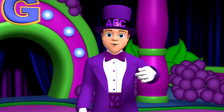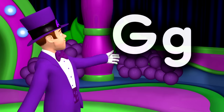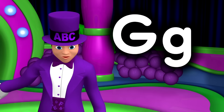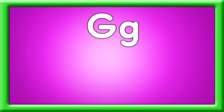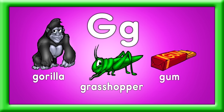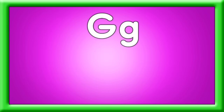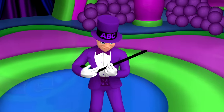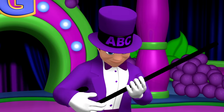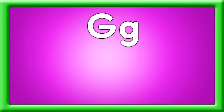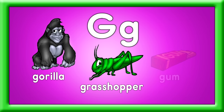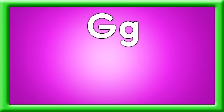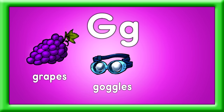Great job! You've learned up to the letter F. Look at the capital G and the lowercase g. Sing some G words, then we'll hum. Gorilla, grasshopper, and some gum. These are G words, that's what they are. Grapes, goggles, and guitar. Gorilla, grasshopper, and some gum. These are G words, that's what they are. Grapes, goggles, and guitar.